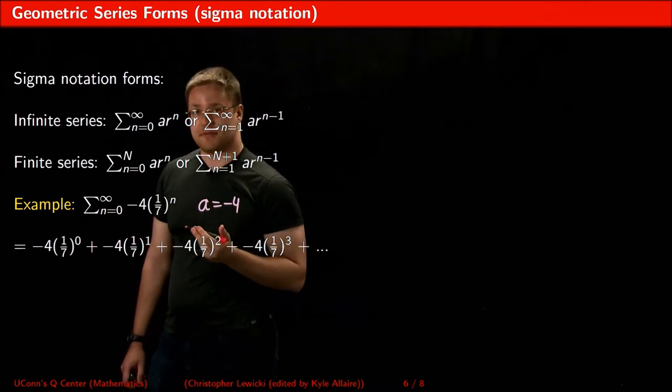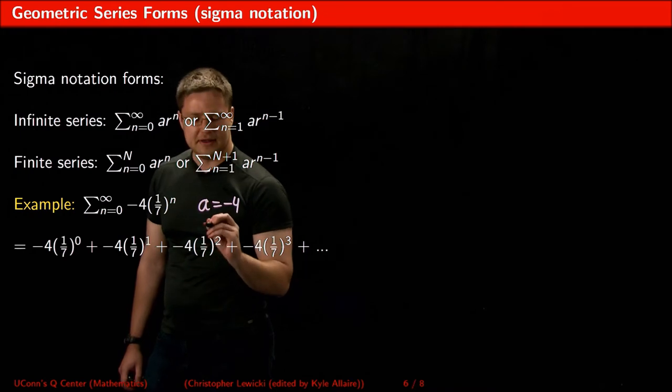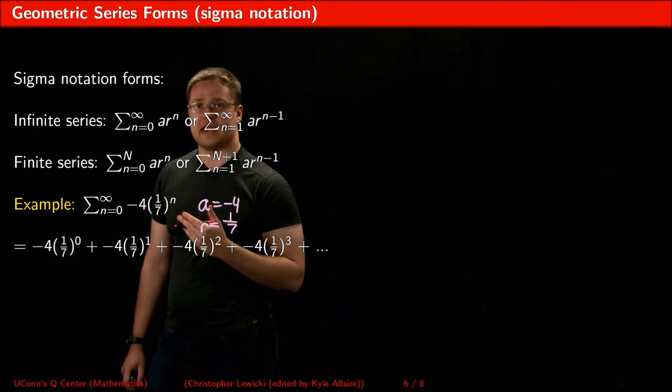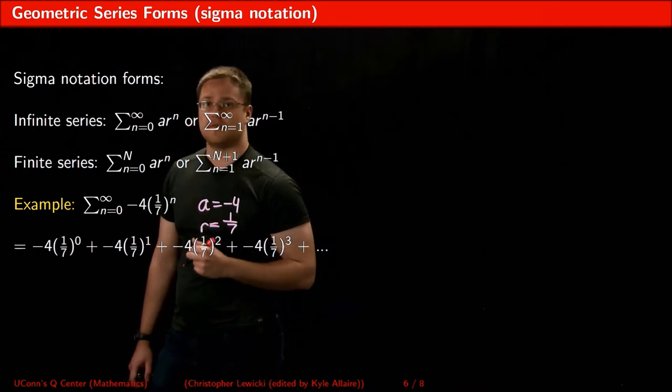meaning the first term of this particular series is negative 4, and R is 1 over 7, meaning my common ratio between any two consecutive terms is 1 over 7.